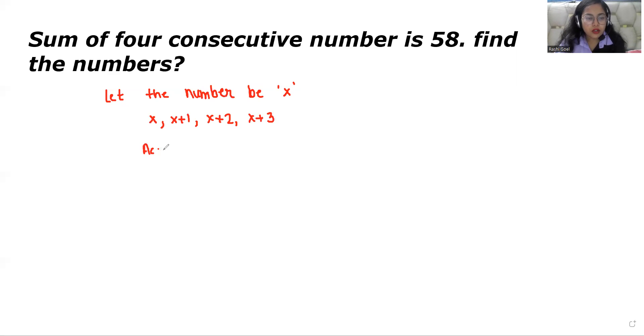According to the question, we need to find the sum, so we add all the numbers: x plus x plus 1 plus x plus 2 plus x plus 3. The sum equals 58.